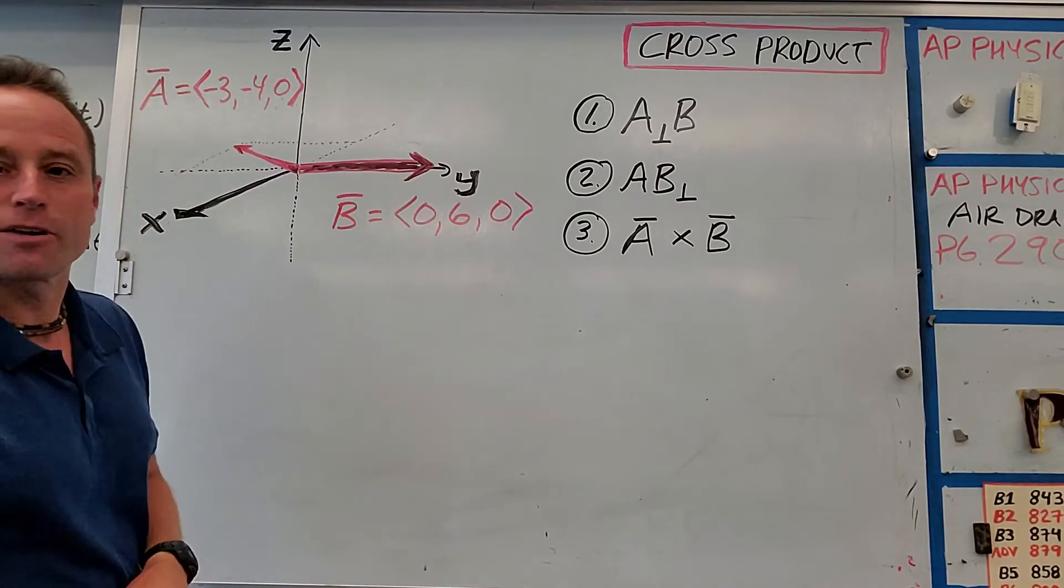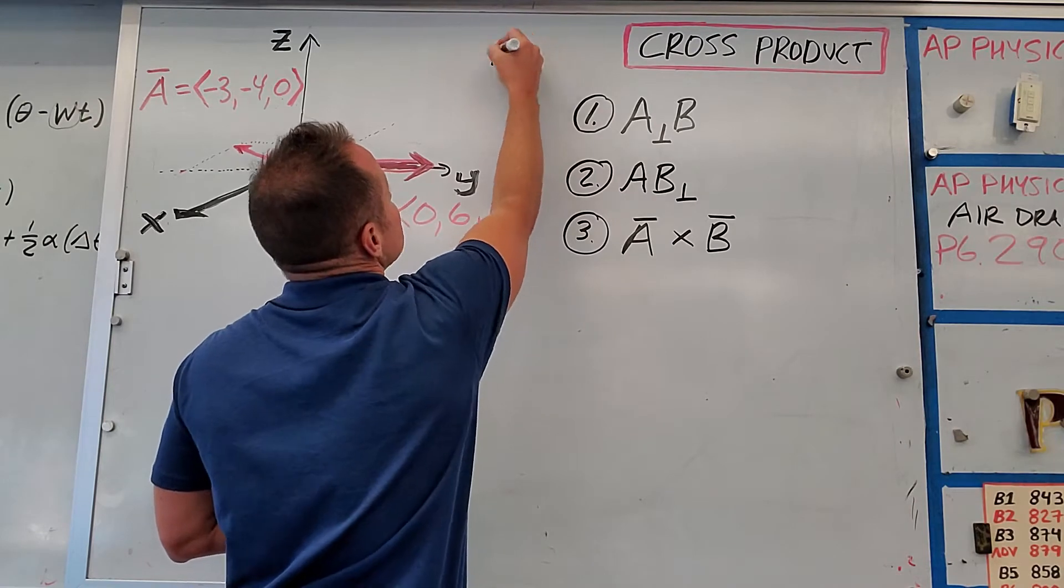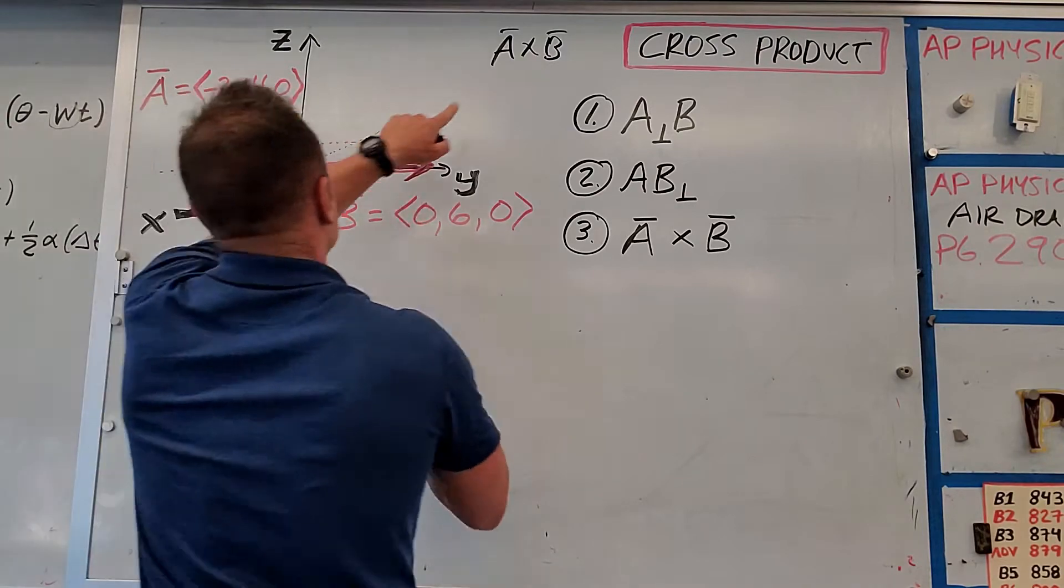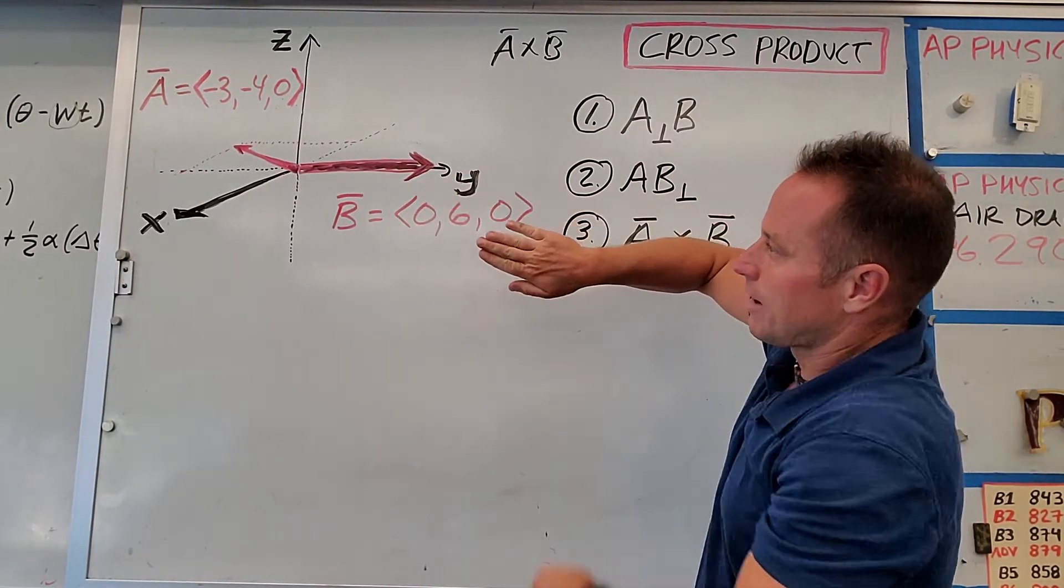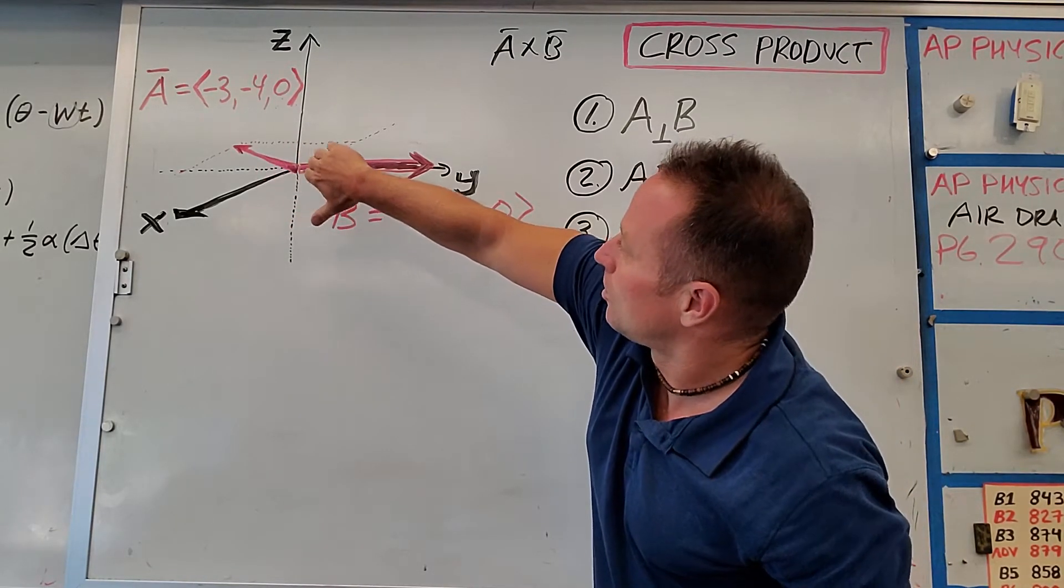So what you do to get the direction of the cross product of A cross B, so that's going to be our goal, is to find the direction of A cross B. What you do is you decide which vector is first, so in this case it's going to be A. What you do is you kind of point your hand along A and then just fold it into B.